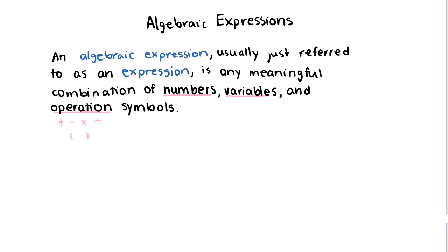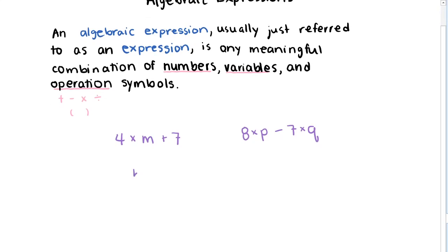Some explicit examples: 4 times m plus 7 — here we've got numbers, operations, and a variable. That's an example of an expression. We can also create expressions with multiple variables, like 8 times p take away 7 times q. We can use division in interesting ways: b plus 1 all divided by 5 is another expression, and so is x plus y divided by 3. All of these include numbers and variables put together through operations.